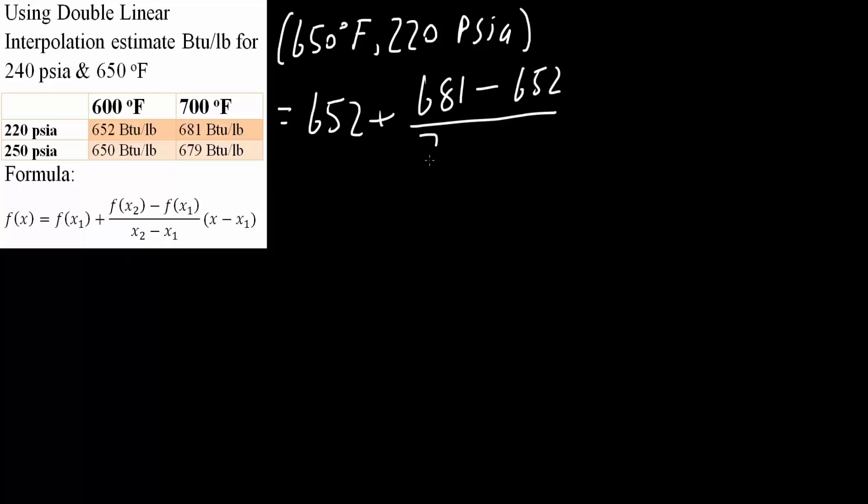So divided by 700 minus 600, times x minus x₁. x is going to be 650, that is what we're solving for. If we run this into a calculator, we would get 666.5 BTUs per pound. This is one piece that we need.